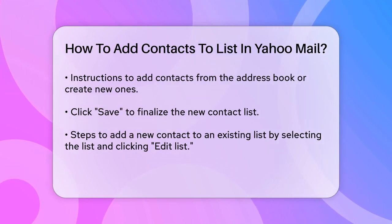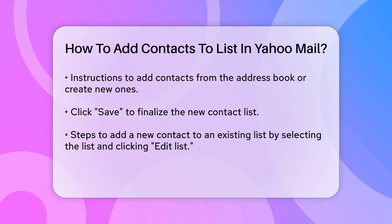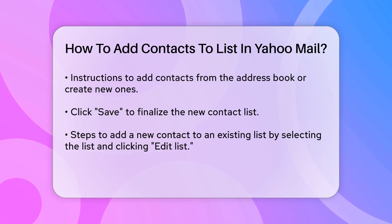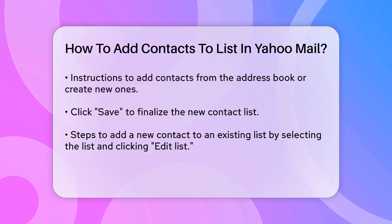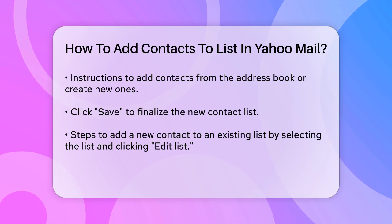To send an email to your new list, simply compose a new message and type the name of the list in the To field. Yahoo Mail will automatically suggest the list, and once you select it, the To field will be populated with all the contacts in that list.